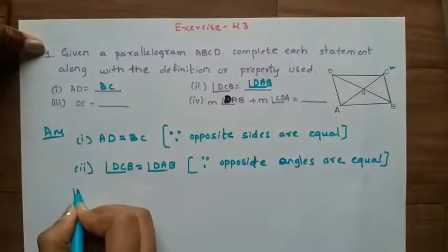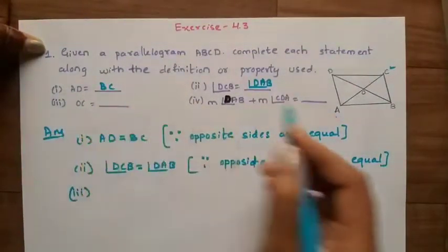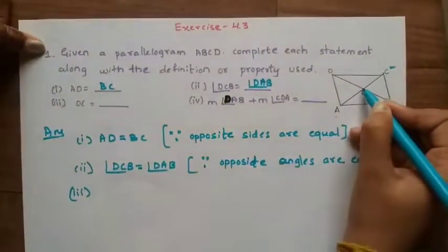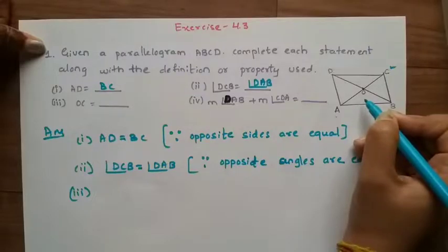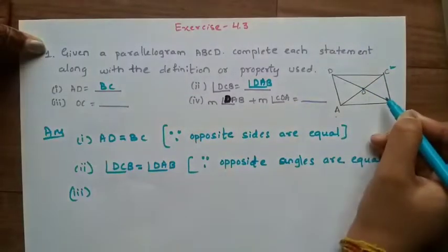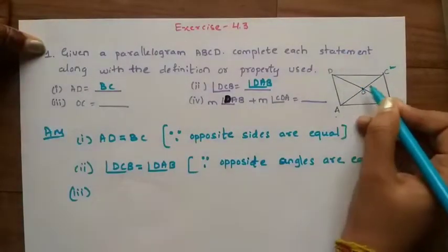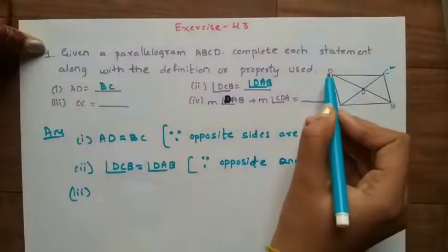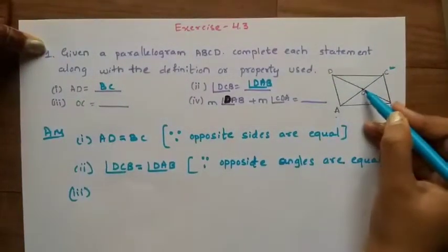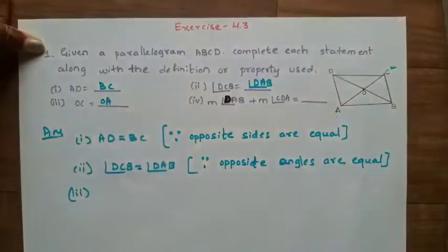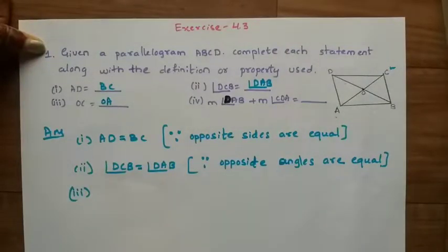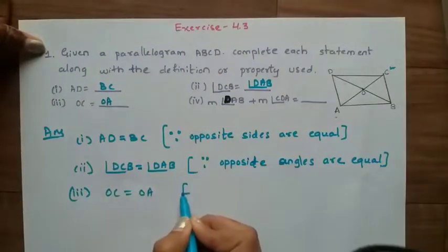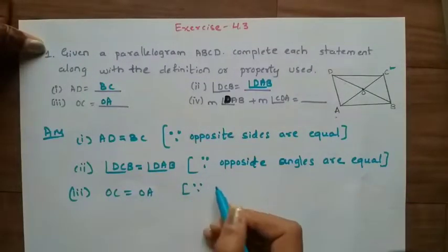The third question: OC is equal to what? OC is part of the diagonal. We know that AC and DB are the diagonals and they intersect at point O. In a parallelogram, the diagonals bisect each other, so OC is equal to OA and OB is equal to OD. Therefore OC is equal to OA, because the diagonals of a parallelogram bisect each other at the midpoint.